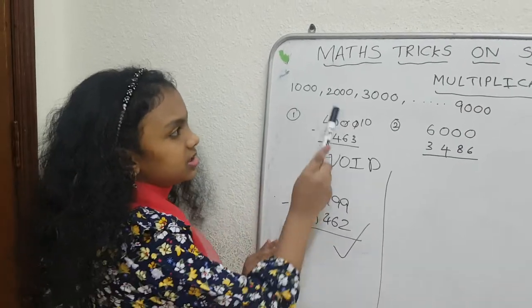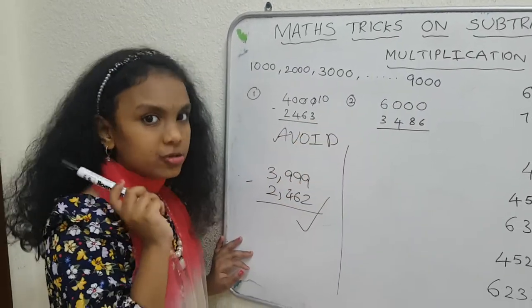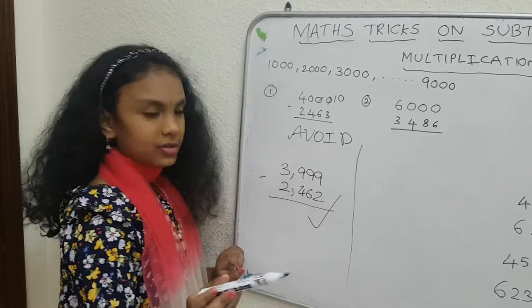But first, only for 1000, 2000, 3000 and so on till 9000 only, this trick works, okay? Now, we are done. So let's do the math.